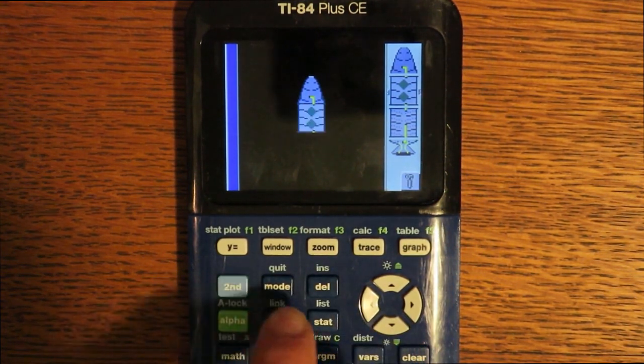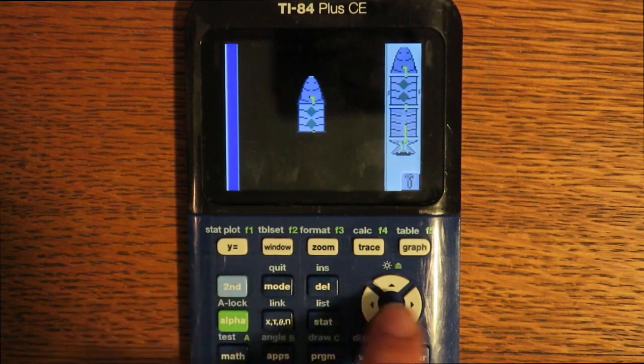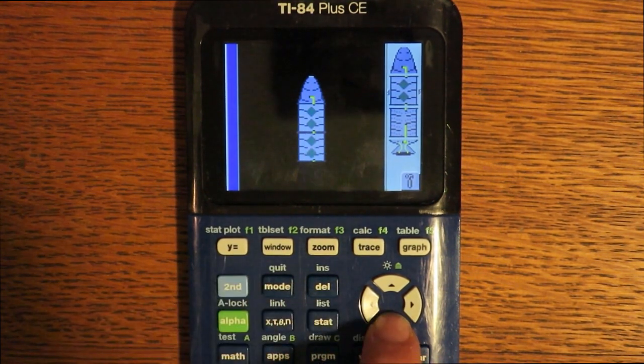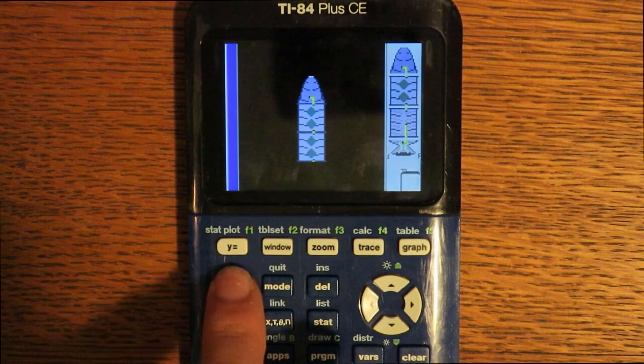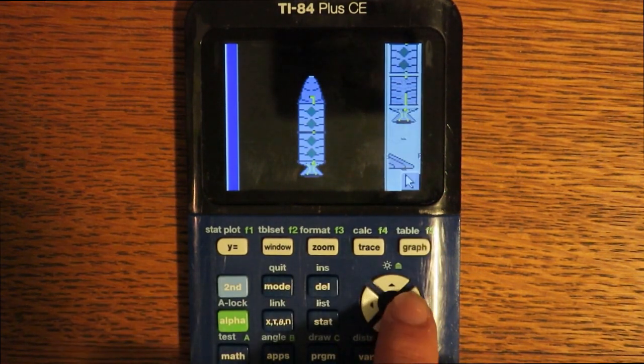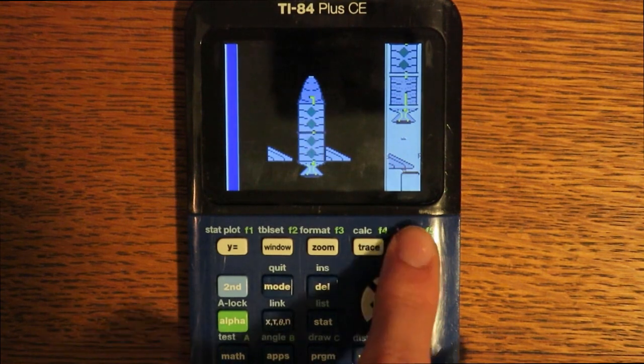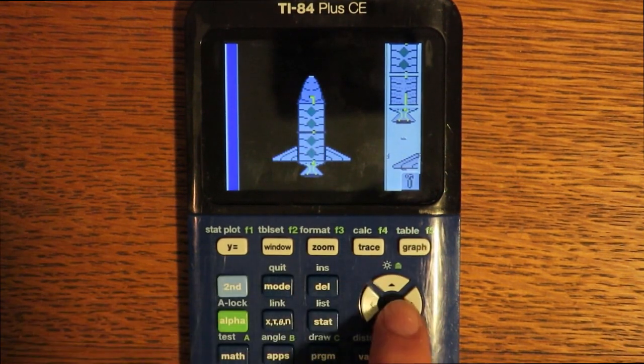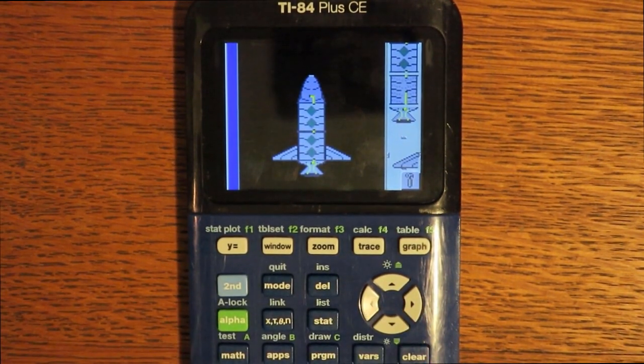Now, you can go and select another part. Select it. You can place multiple of each parts. There. Now we have the basic craft.